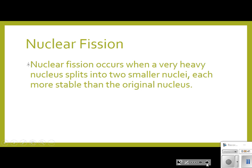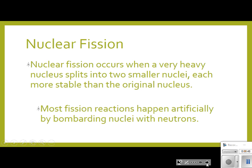A nucleus splits into two smaller, more stable nuclei. Most of the time, fission is occurring artificially — somehow we bombard the nuclei with neutrons.